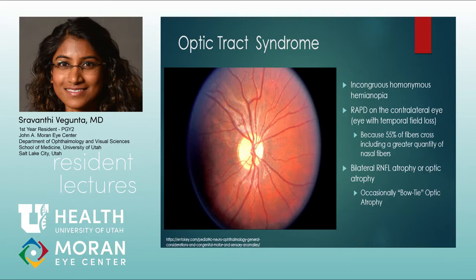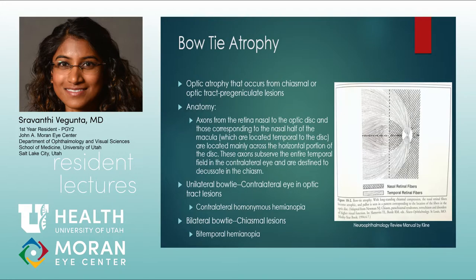Optic tract syndrome is a triad of findings: incongruous contralateral homonymous hemianopia; an RAPD on the contralateral eye (because the majority of the optic tract is composed of already-decussated nasal fibers, so more contralateral eye fibers are affected); and bilateral RNFL atrophy or optic atrophy in a bow-tie configuration. This bow-tie pattern can help localize the lesion, though it can be subtle on examination.